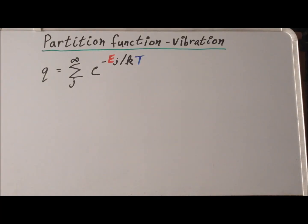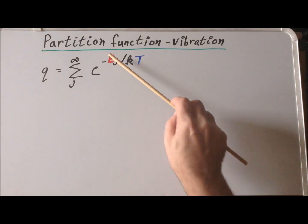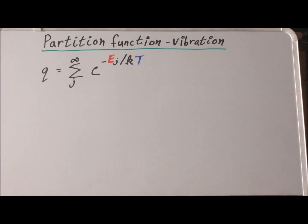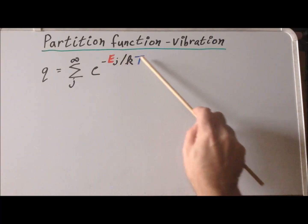Recall that to find the canonical ensemble partition function, we need a series of all the possible states of our system j. The energy for each of those states is this E sub j. This is done at a particular temperature T.